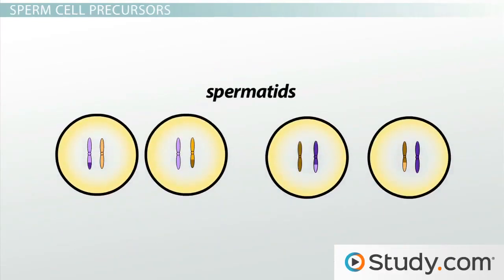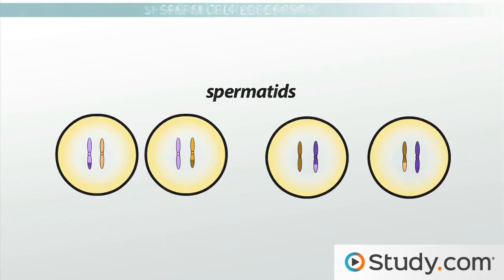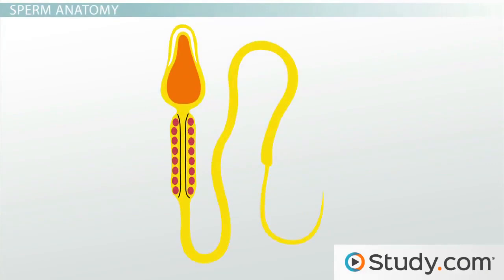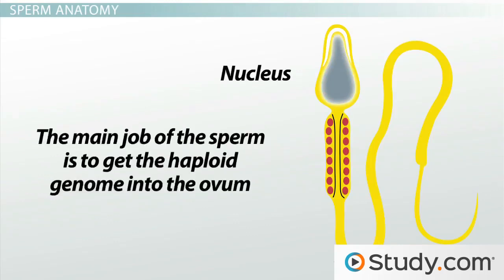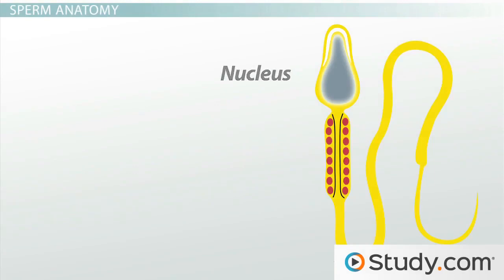These spermatids now have the correct number of chromosomes to be functional gametes, but they don't have the physical characteristics of sperm that allow them to swim to the ovum and fertilize it. A functional sperm looks a lot like a tadpole, but sperm have only three basic components. The nucleus contains the haploid genome and not much else. The main job of the sperm is to get the haploid genome into the ovum, which will provide the other half of the genome along with pretty much all of the cytosol, cell membrane, and cellular organelles.